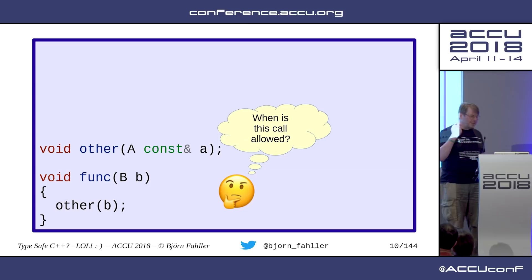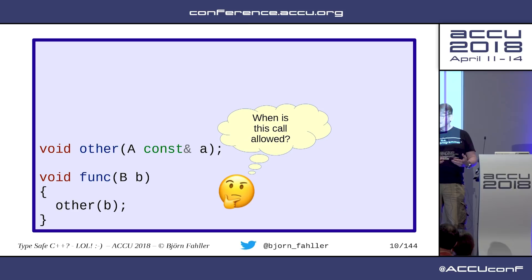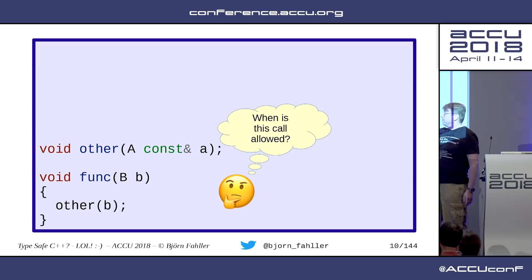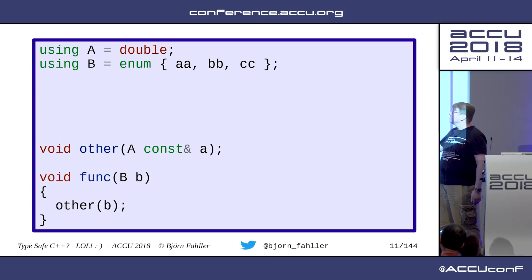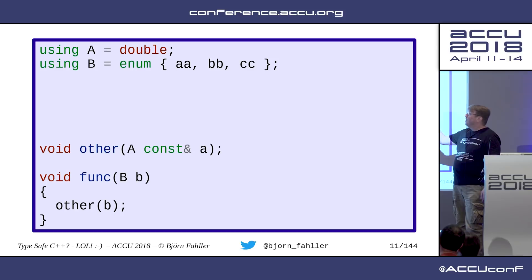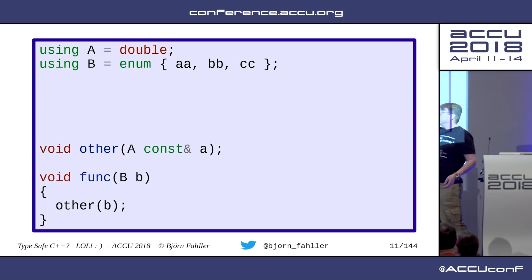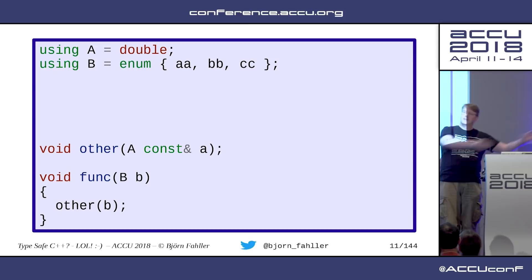That was actually my reaction too. I felt very embarrassed. But what I did was, I wanted to see: is there anything I can do to prevent this from happening? Is it possible? So, just as a thought experiment, I have this function func that takes a B and calls another function with that B, but the other takes an A. When is this call allowed? Well, we cannot say — we have no idea what A and B are. In this case, this is perfectly legal: a C-style enum is really just a glorified integer, and ints are implicitly convertible to double. So there's nothing type-safe in C++.